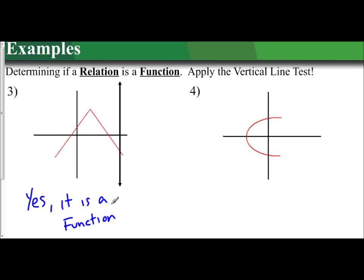If I were to look at example 4, where I take this vertical line and drag it across the graph, we see as you drag across the graph, we have two points of intersection. So since there are two points of intersection, we say this fails the vertical line test. So then no, it is not a function.